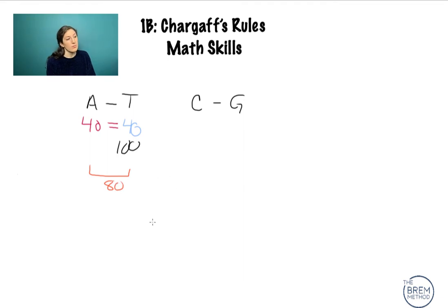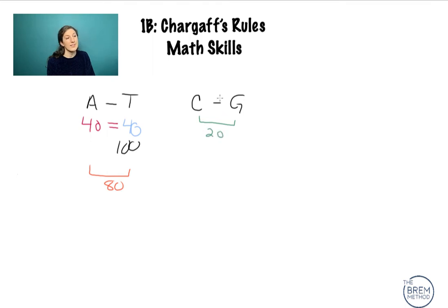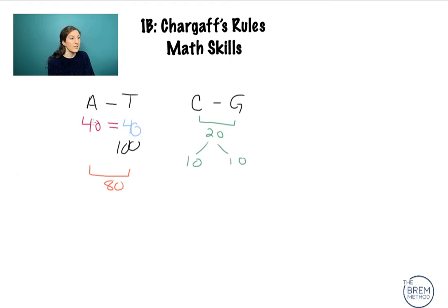We just need to see what's left. 100 minus 80 is 20, so what's left for both C and G is 20 base pairs. Since there have to be equal amounts of both cytosines and guanines, we divide by 2 and get 10 of each. Our ratio is 40:40:10:10, or 4:4:1:1 for all four base pairs. This math will follow no matter what — this is why it's a rule.